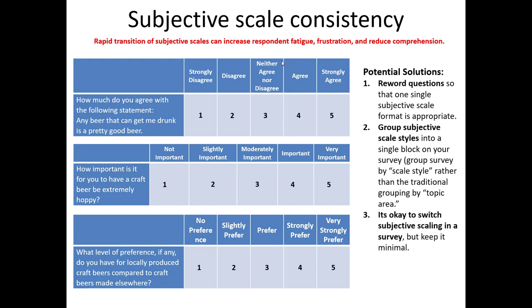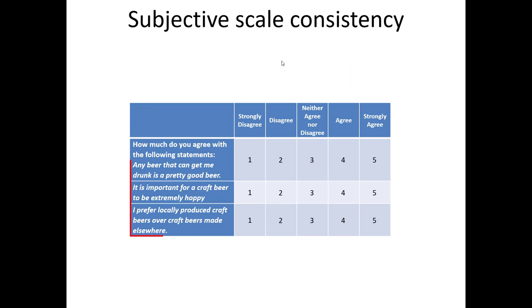So what are some potential solutions we can consider? Most typically, we just reword the questions so that one single subjective scale type is now appropriate for all three questions. Another option is we simply regroup and reorganize our entire questionnaire so that all of the subjective scale styles are merged together in a single place. Keep in mind that I'm not saying we can never switch up our subjective scales. Maybe it's appropriate to have a Likert scale in one part and an importance scale in another, but we should be cautious about overdoing it. Here's an example of a basic solution: we're asking the same three questions but now in such a way that a Likert scale is appropriate for all three.